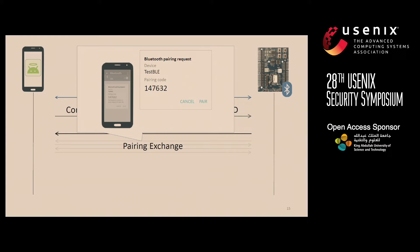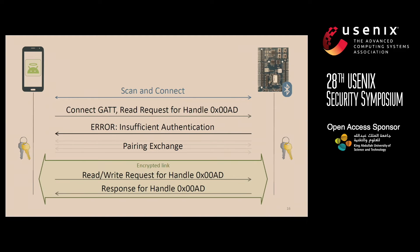I only consider strong pairing mechanisms where user interaction is actually required. So if the user decides to go ahead with pairing, the two devices will generate keys, encrypt the transport between them, and then typically go through a process called bonding, where long-term keys are generated. If the good app tries to read or write the pairing-protected characteristic from that point onwards, it will be met with valid responses because the request will be coming over the encrypted link.